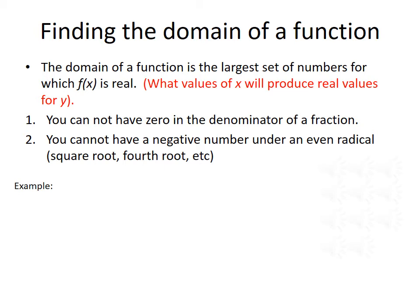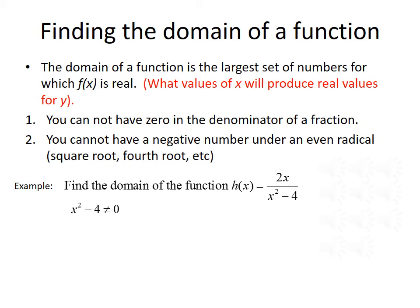Let's do an example. Find the domain of the function h(x) equals 2x divided by x squared minus 4. The rule that comes into play here is that I cannot have 0 in the denominator of a fraction. So we note that x squared minus 4 cannot equal 0. Adding 4 to both sides gives x squared cannot equal 4. Taking the square root of both sides, x cannot equal plus or minus 2. So our domain in set builder notation is the set x such that x does not equal 2 and x does not equal negative 2.